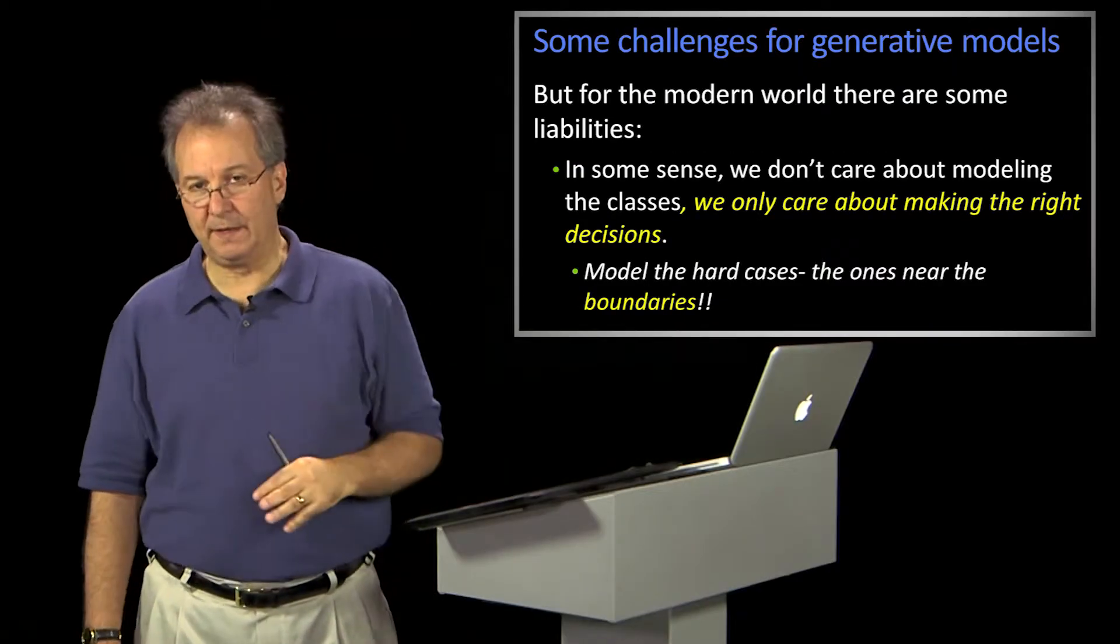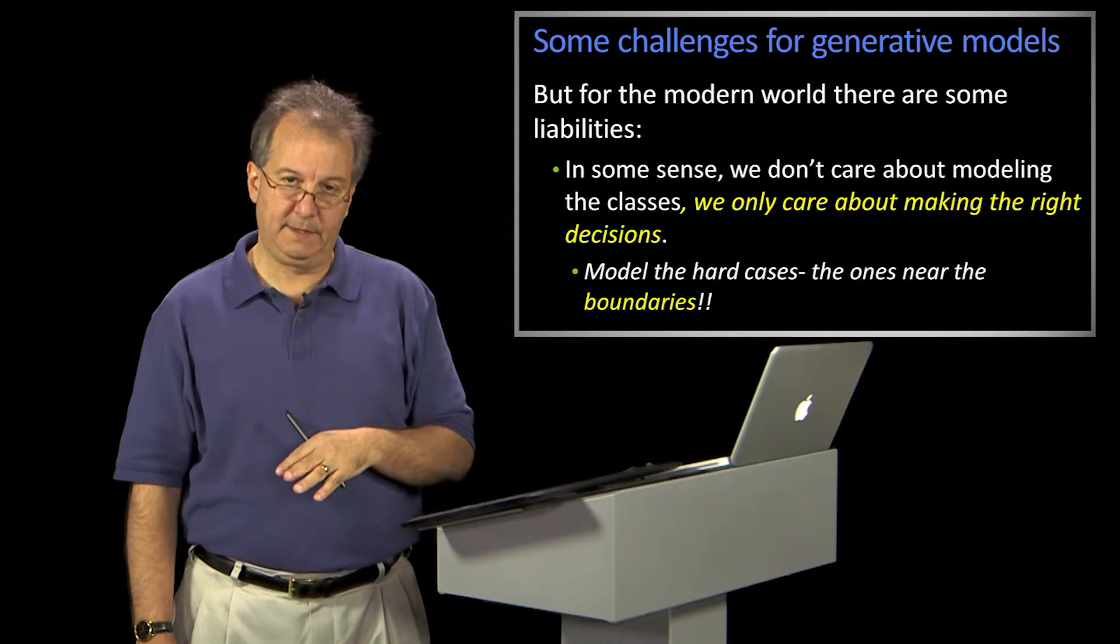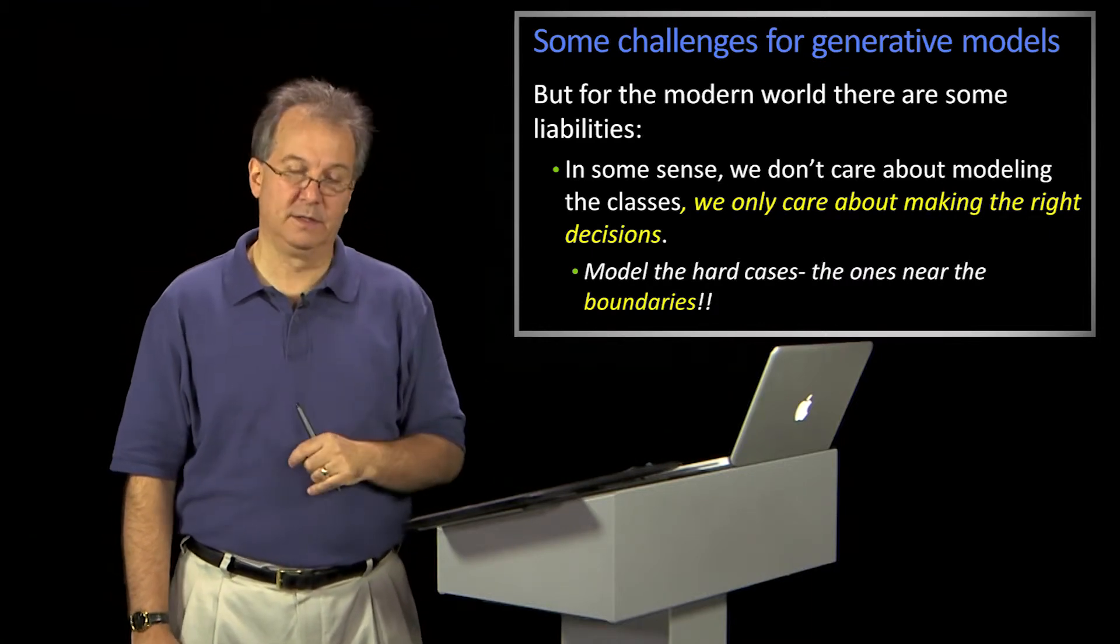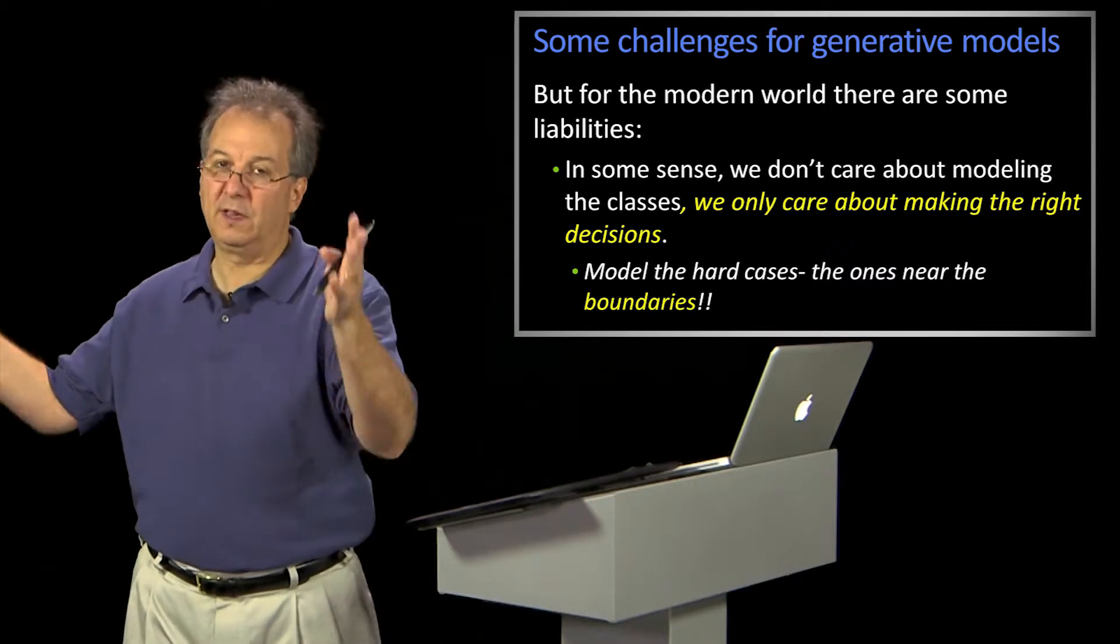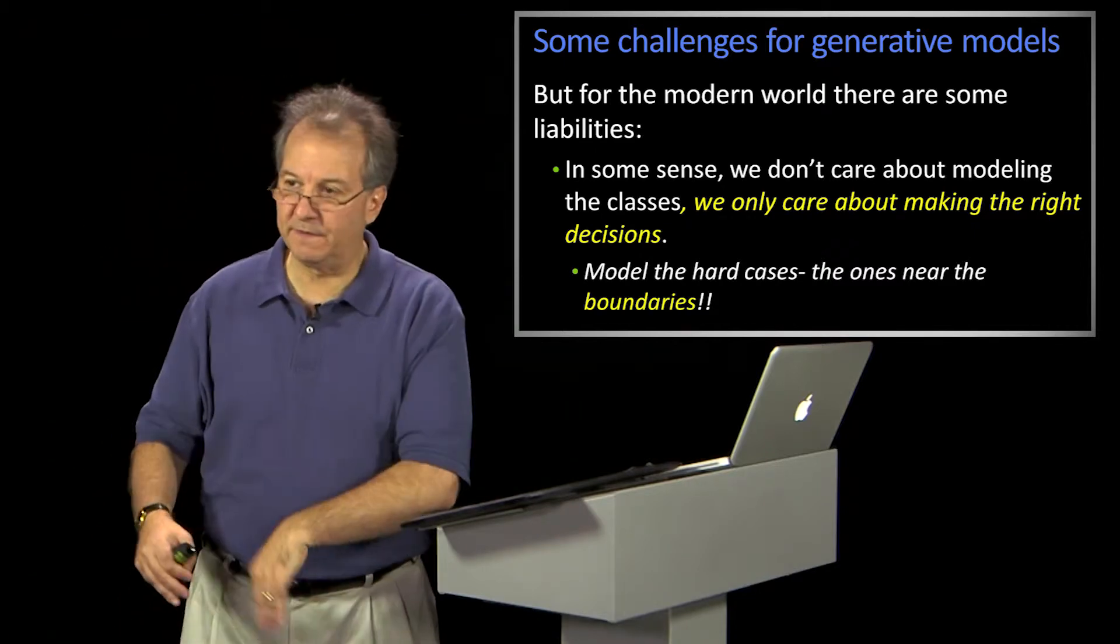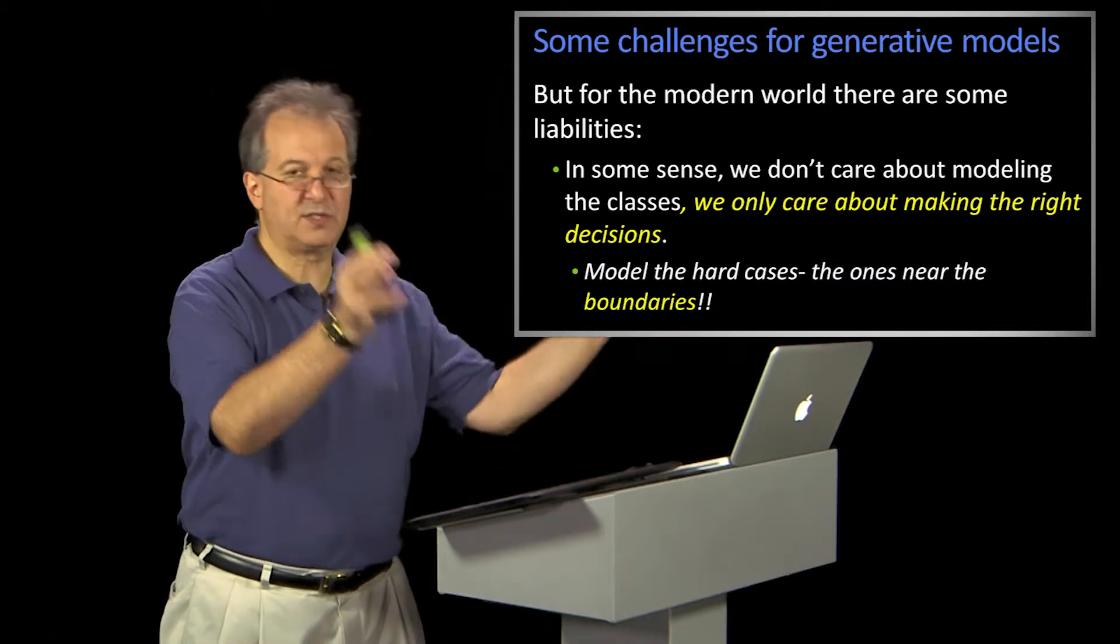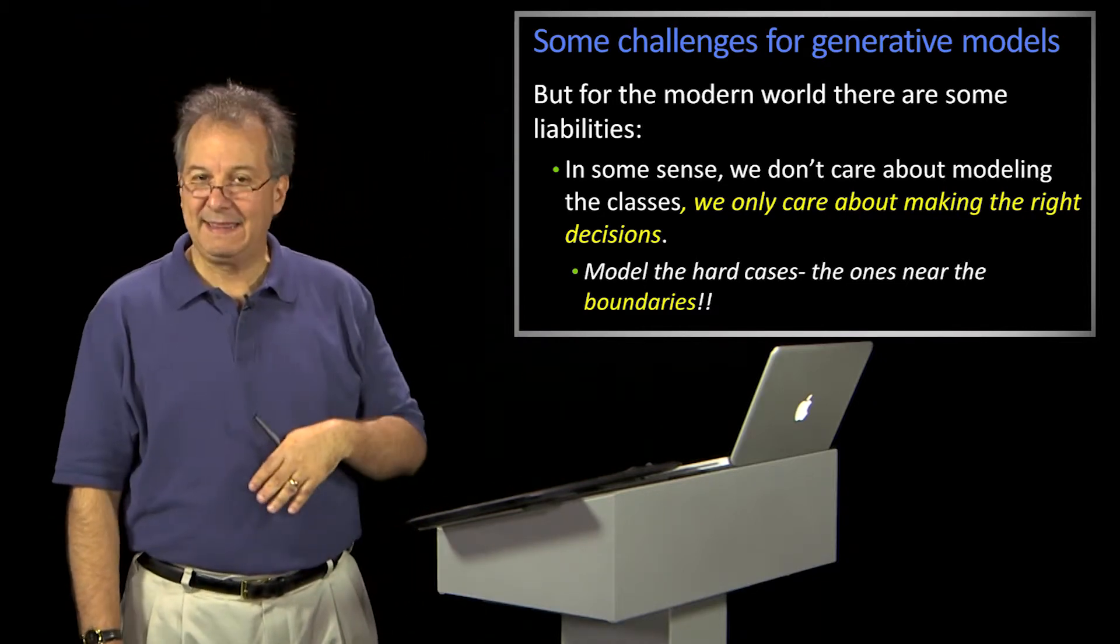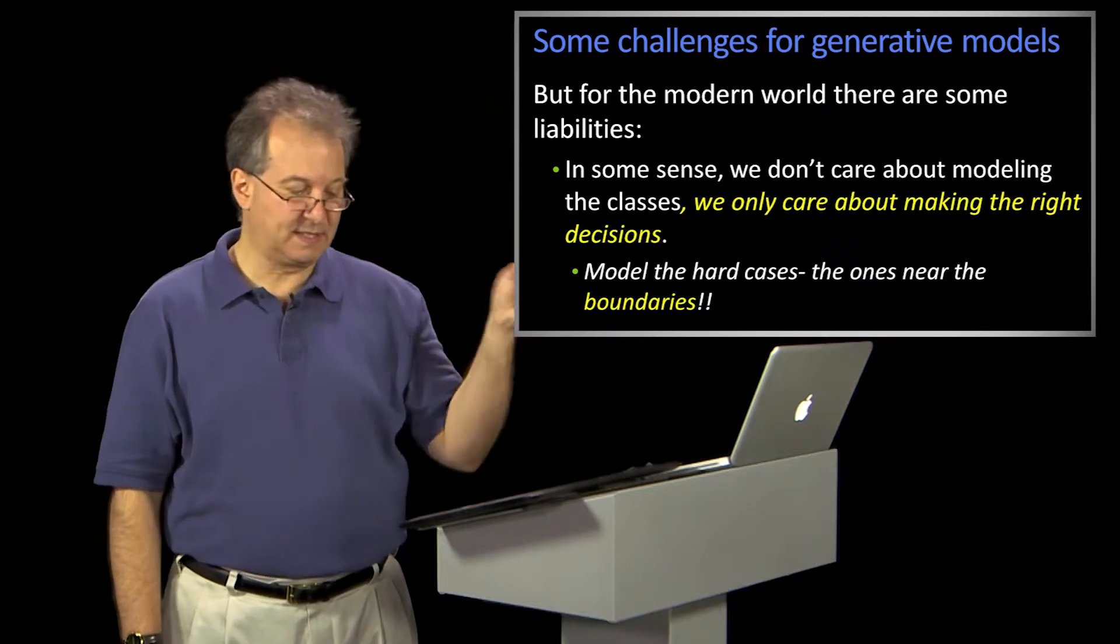But there's even a bigger liability. The bigger liability is that we don't actually care about modeling the whole class. If I've got skin things and not skin things, you can imagine there's a whole bunch of colored pixels that have nothing to do with skin. I don't have to model that as not skin.